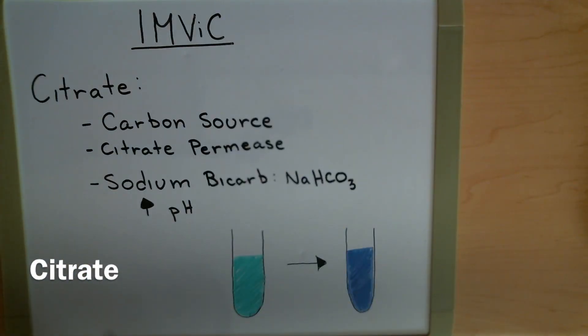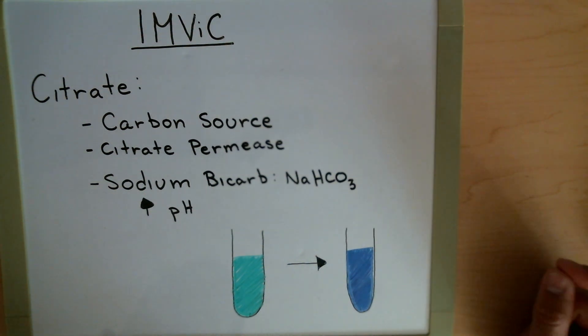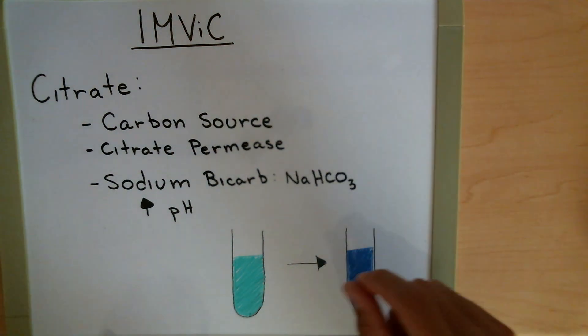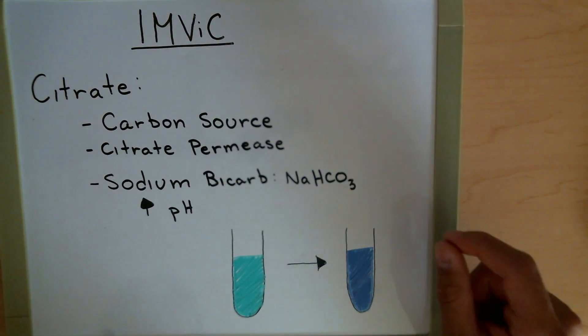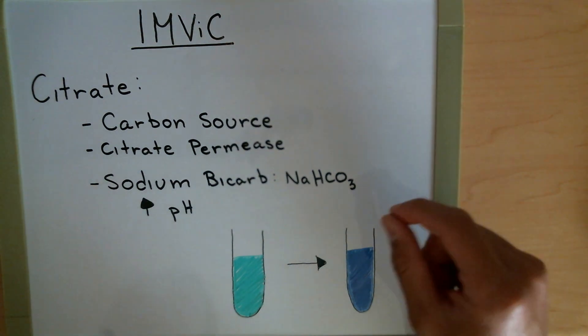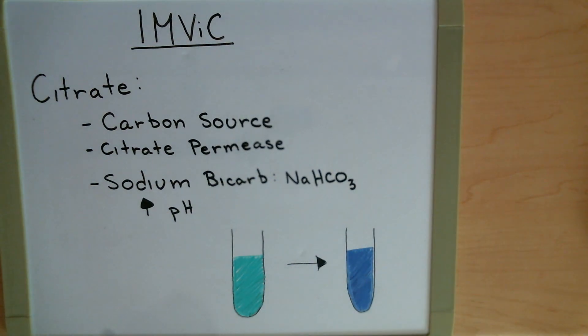With the citrate test, we're going to be using a solid medium inside of a test tube. We're going to take our loop, flame it, do all our aseptic technique. Once we have our bacteria, we're going to go down as far into the test tube as much as we can. We don't want to touch the media just yet or pierce it. Once we get down to the bottom of the media, now we're going to apply the bacteria to it and we're going to squiggle our way back up. One go should be more than enough.